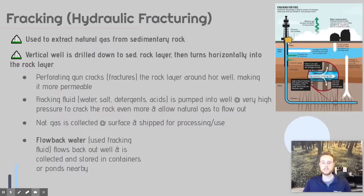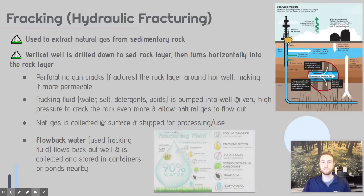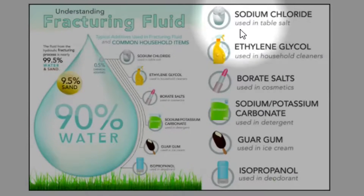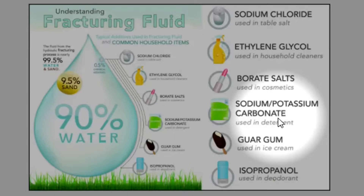A problem with this is the flowback water — the used fracking fluid — which is going to be stored in wells or ponds nearby and can leak out to the environment. Looking more closely at fracking fluid: it contains salt and detergents, which lubricate the well so natural gas flows out more easily. That's a problem if it escapes and leaks into the surrounding environment.